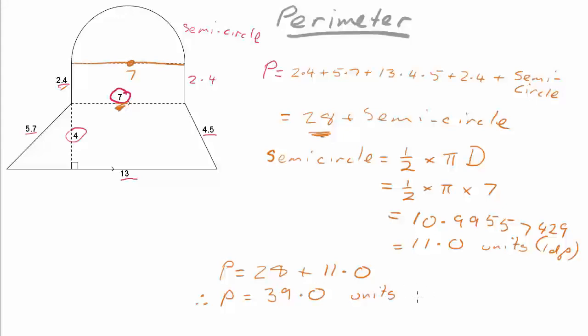And remember we rounded that to one decimal place, so we say that's correct to one decimal place. I hope that video helps to clarify how to calculate the area and perimeter of composite shapes. Thank you very much for watching.